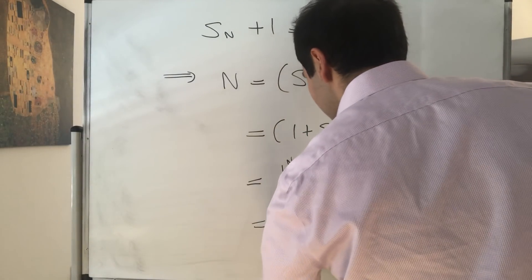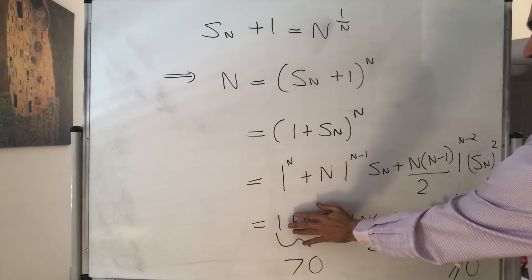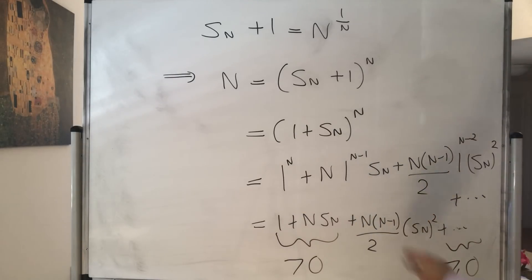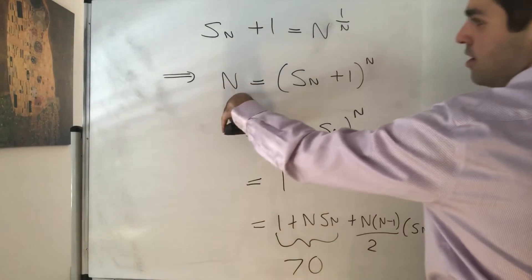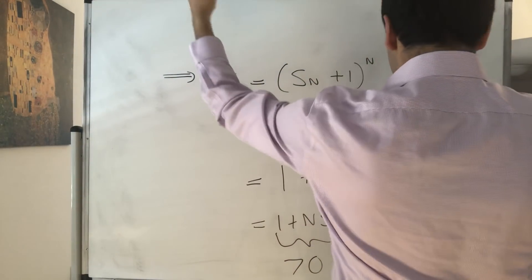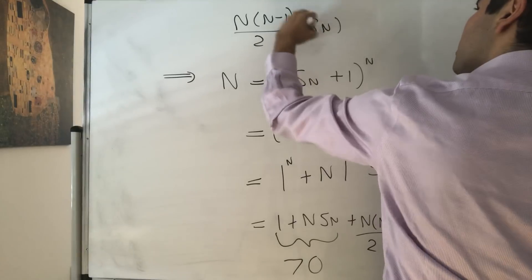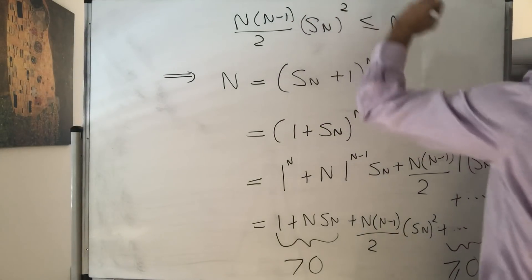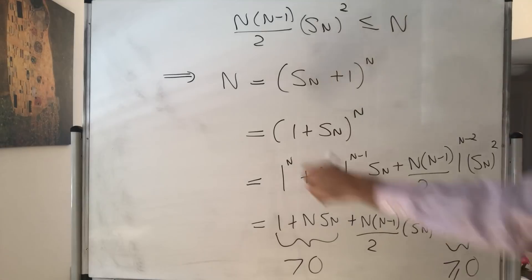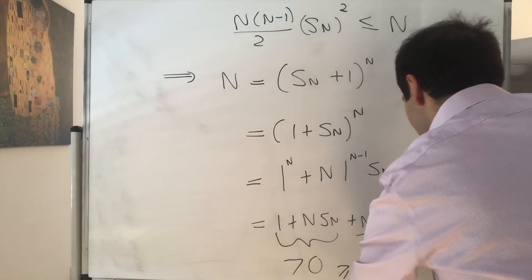Now the thing is well 1 is positive, S_n is not negative so this is positive and this is greater or equal to zero. So in other words all this term becomes greater or equal to n times n minus 1 over 2 times S_n squared. So in other words we can conclude that n or if you like even easier so n times n minus 1 over 2 S_n squared is less than or equal to n. You see because n becomes greater or equal to n times n minus 1 over 2 S_n squared.